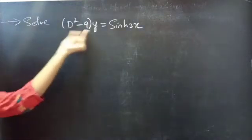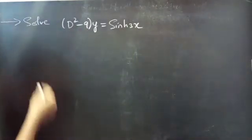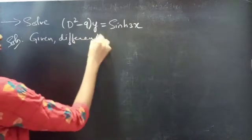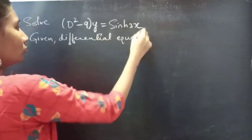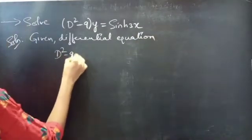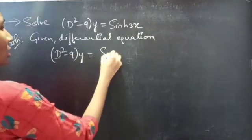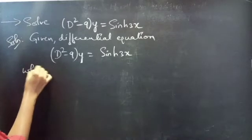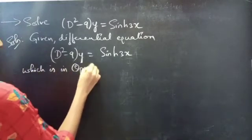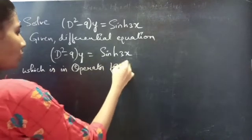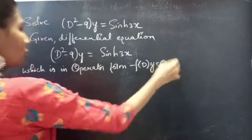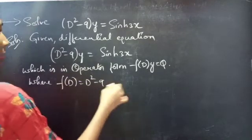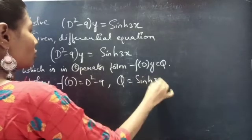Problem: solve (D² - 9)y = sinh(3x). Given differential equation (D² - 9)y = sinh(3x), which is in operator form f(D)·y = Q, where f(D) = D² - 9 and Q = sinh(3x).